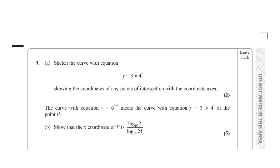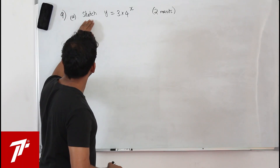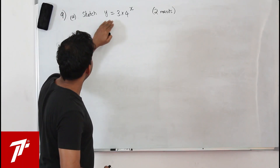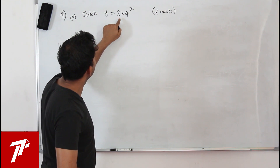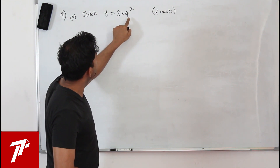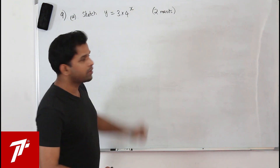Question number 9, part A: sketch the equation y equals 3 times 4 to the power x and show the coordinates of any point of intersection with the coordinate axis. They want you to sketch the exponential function y equals 3 times 4 to the power x.